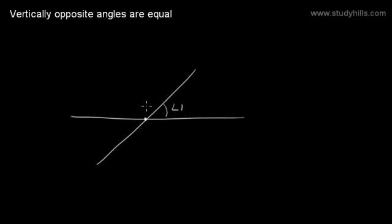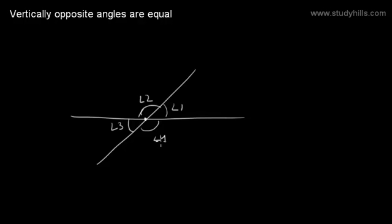Angle 1, Angle 2, Angle 3, and Angle 4. Here, Angle 1 and Angle 3 are vertically opposite. Similarly, Angle 2 and Angle 4 are vertically opposite. We will prove that vertically opposite angles are equal.